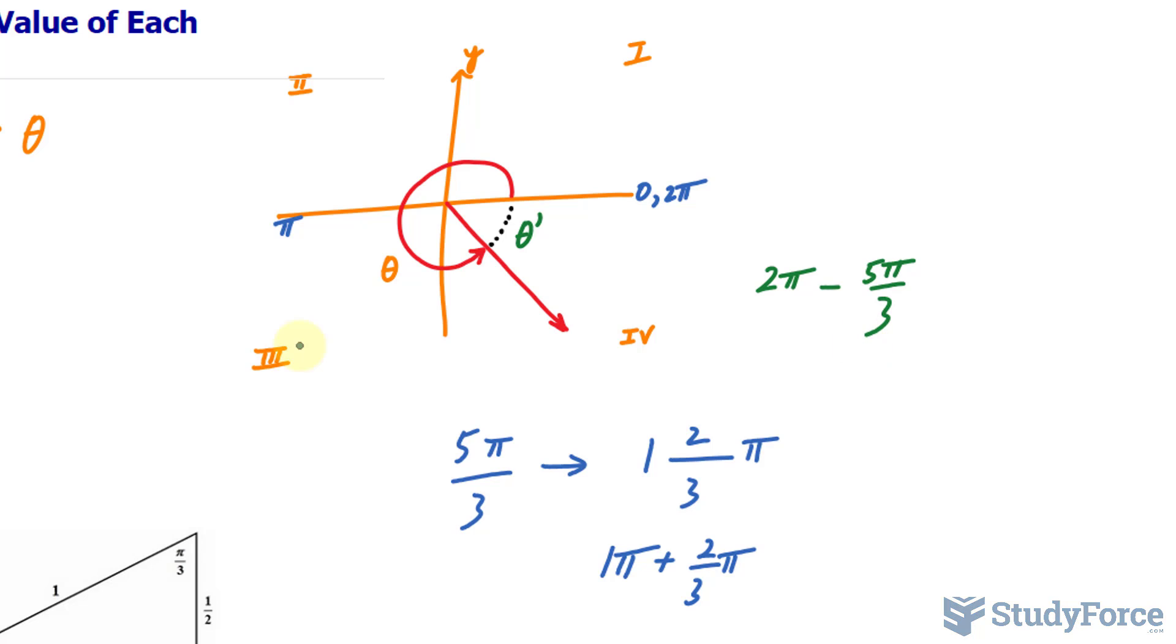It's important to mention that if this angle were in the first quadrant, you wouldn't have to subtract it by anything. If it were in the second quadrant, you would be taking π minus your angle. If it's in the third quadrant, you'd be taking your angle minus π. And as we mentioned, in the fourth quadrant, we subtract it from 2π.